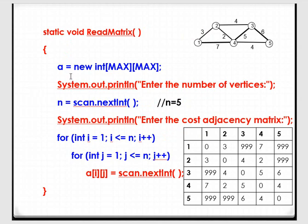When we call the readMatrix function, enter the number of vertices. The graph I have considered for this explanation has 5 vertices, so N value is 5. Enter the cost adjacency matrix — this is what the matrix for this particular graph looks like, and that is going to be stored in A.